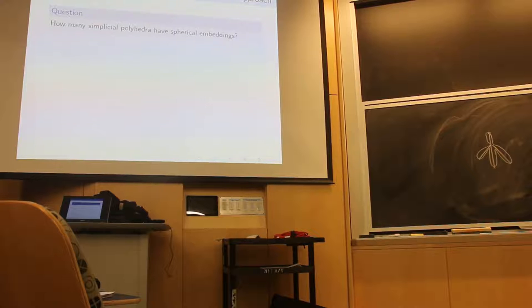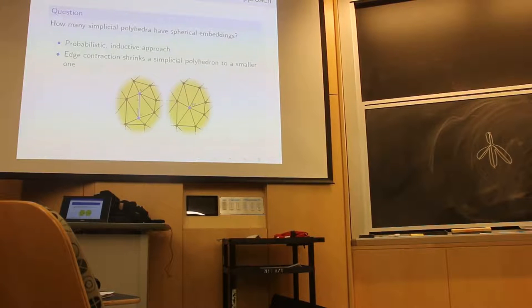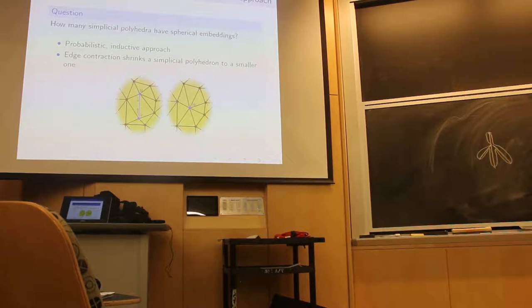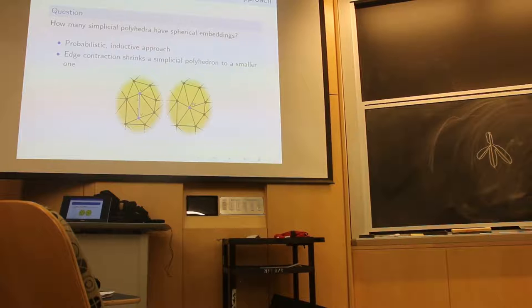And so, we looked at the question of how many simplicial polyhedra have spherical embeddings. We took a computational approach to this problem, trying to establish a lower bound on the number of simplicial polyhedra which have embeddings on a sphere. The way we did this was, we looked at the operation of edge contraction, which takes one edge and contracts it down to a point. By Steinitz theorem, this takes a simplicial polyhedra and maps it to a smaller simplicial polyhedra. You can see that it remains simplicial when you contract the edge and all faces are still triangles.